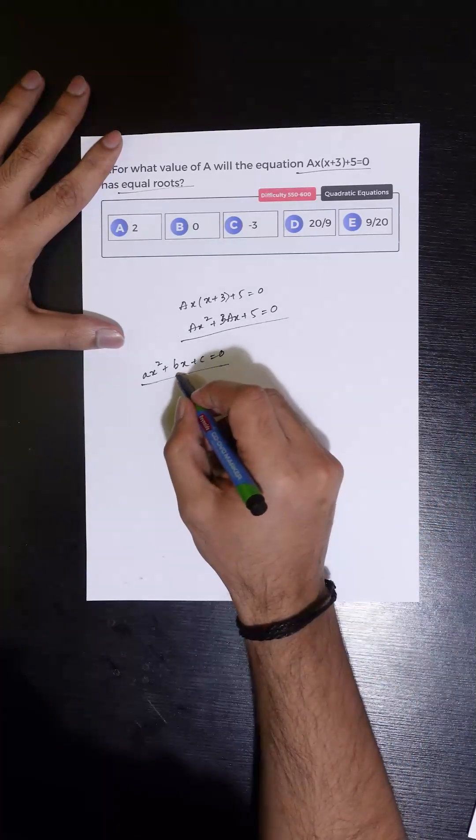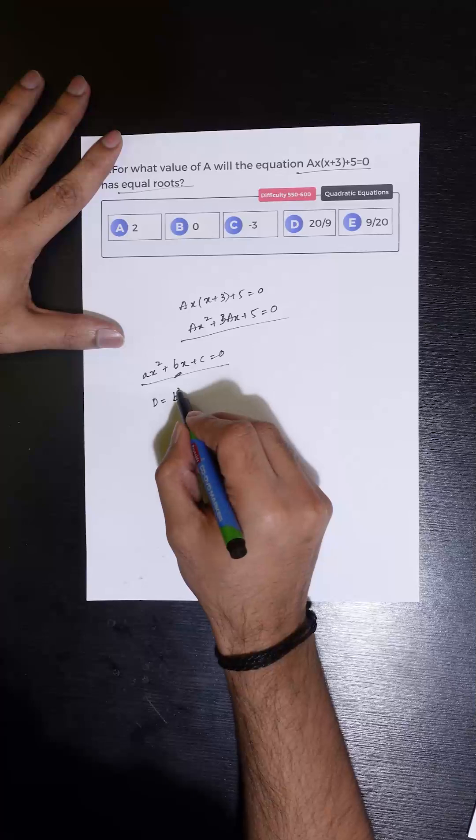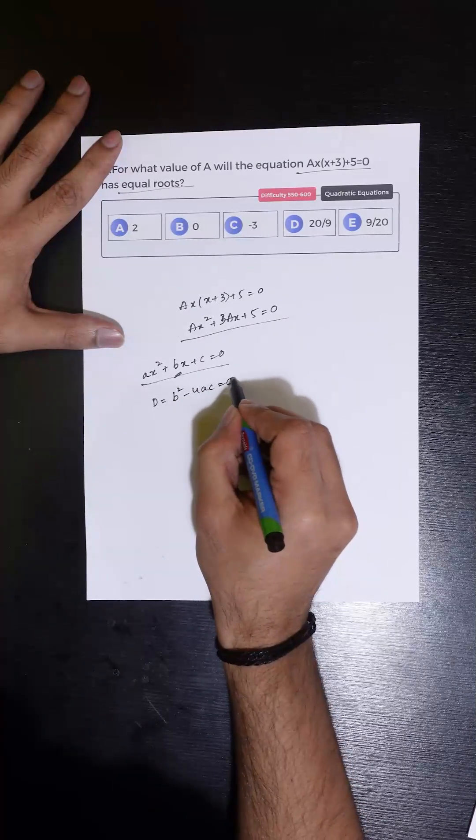the roots of the equation are equal when the value of discriminant, which is B² - 4AC, is equal to 0.